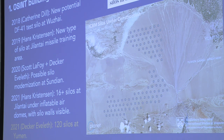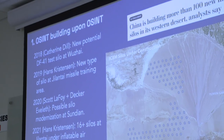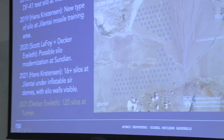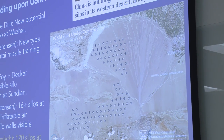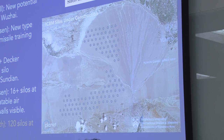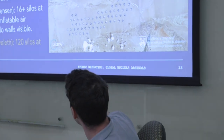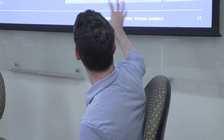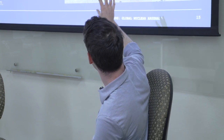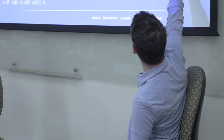A few months later, there was a big discovery by Decker Eboleth, who was at Reed College at the time. He found 120 silos in the desert — really the first indication of how China was going to operationalize these silos. The big signature linking all of these to China's ICBM program was those air domes, which all popped up in the desert, making it pretty clear what they were.